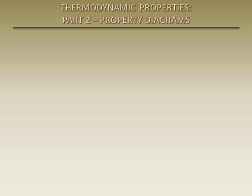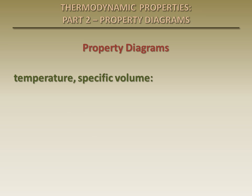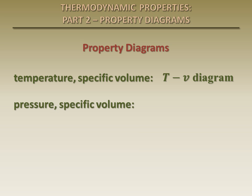The variation of properties during phase change processes are best understood using property diagrams. In this presentation, we will focus on the liquid and vapor phases and their mixtures by discussing two important property diagrams. We will first look at temperature as a function of specific volume, or a T-V diagram, and then at pressure as a function of specific volume, or a P-V diagram.